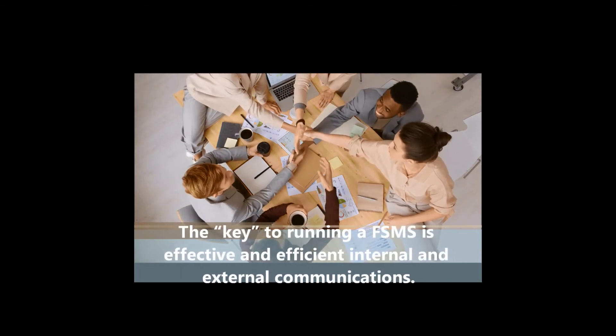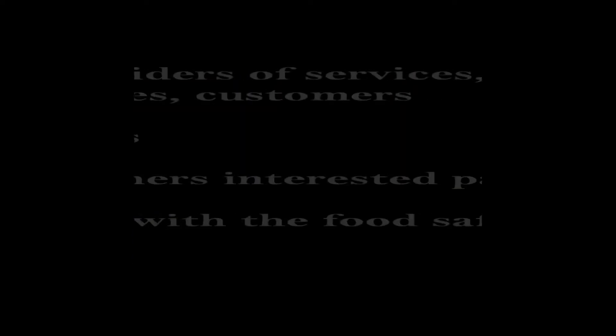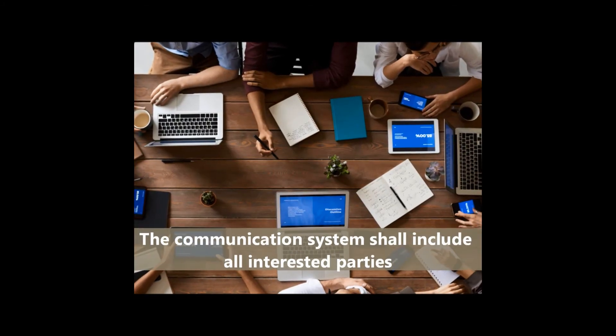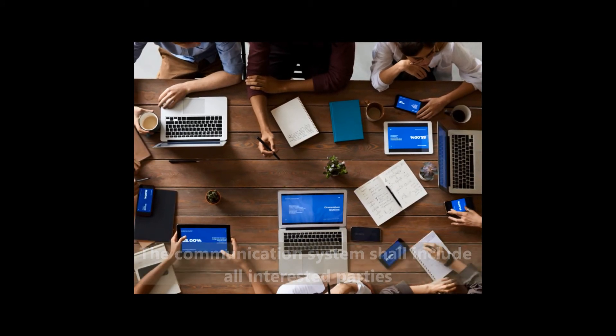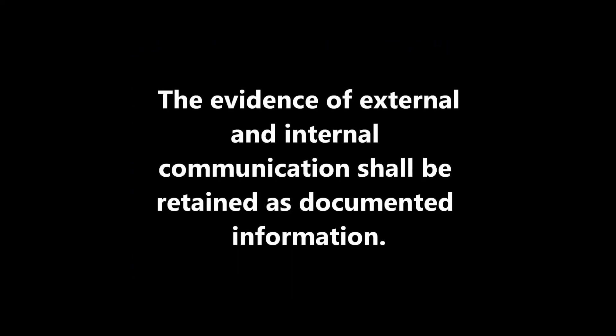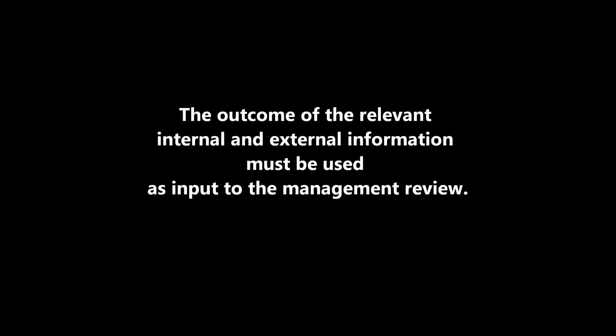Communication. The key to running an FSMS is effective and efficient internal and external communications. There must be an efficient communication system with providers of services, products or processes, customers, regulators and other interested parties, and also internally with the food safety team. The communication system shall include all interested parties. Clearly define who will be the person responsible for these communications. Evidence of external and internal communication shall be retained as documented information, and the outcome of relevant internal and external information must be used as input to the management review.